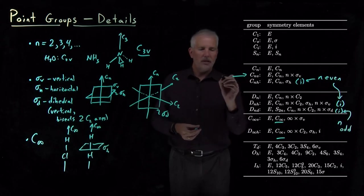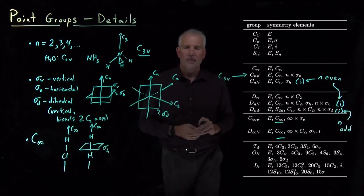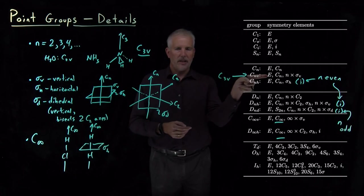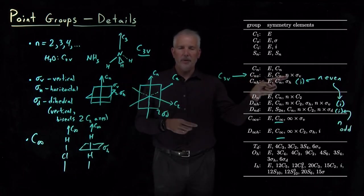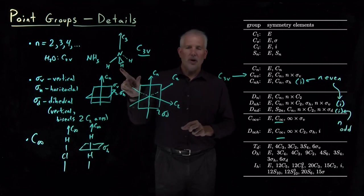That would be C3V. For NH3 falls under this category. It's got its identity, C3 rotation, three sigma V planes, but there's one that's not listed.